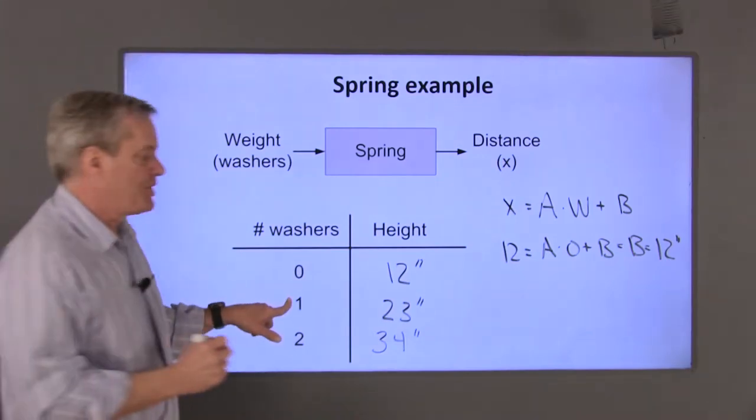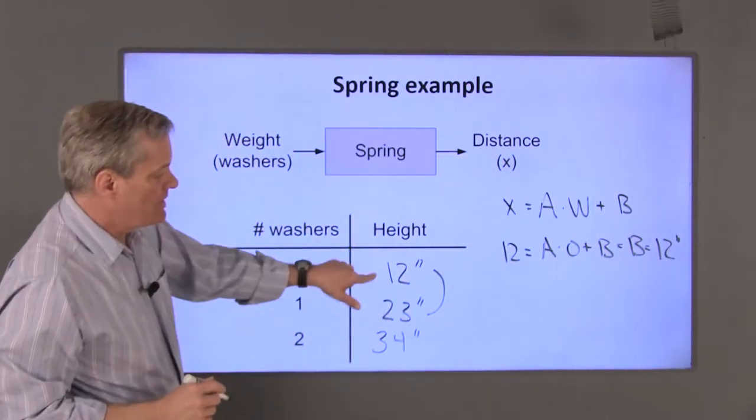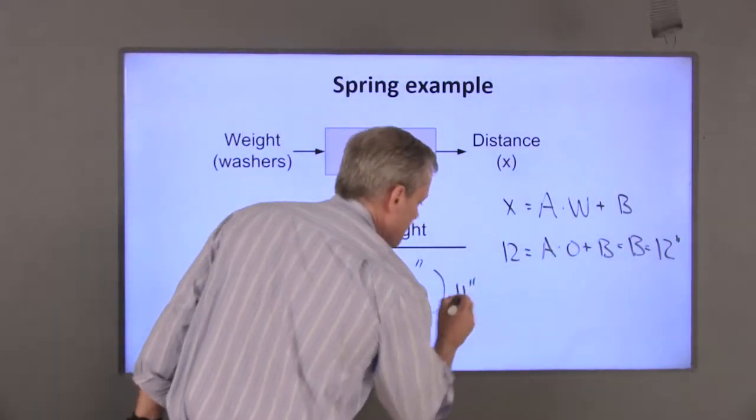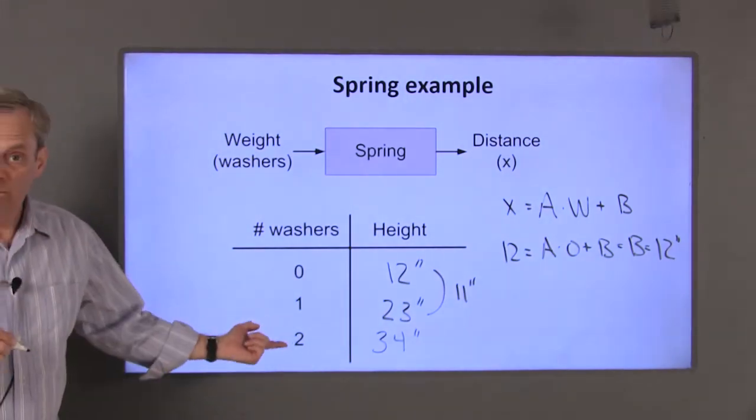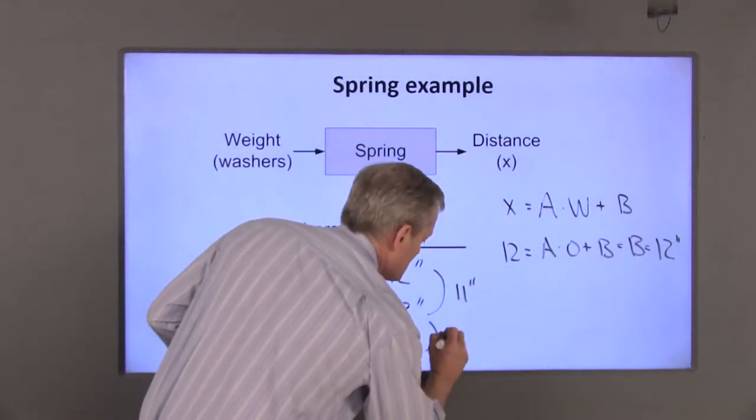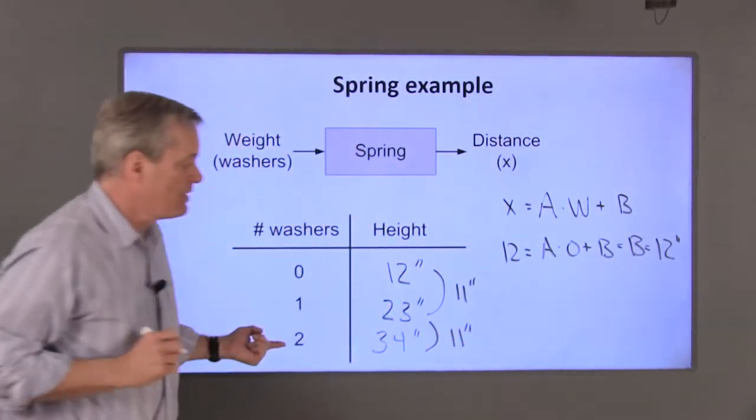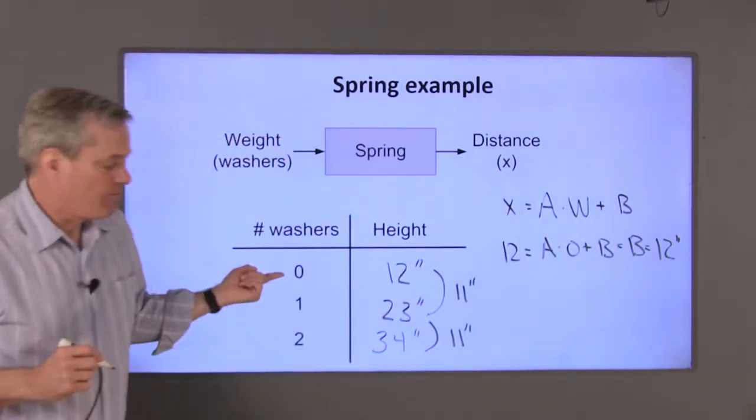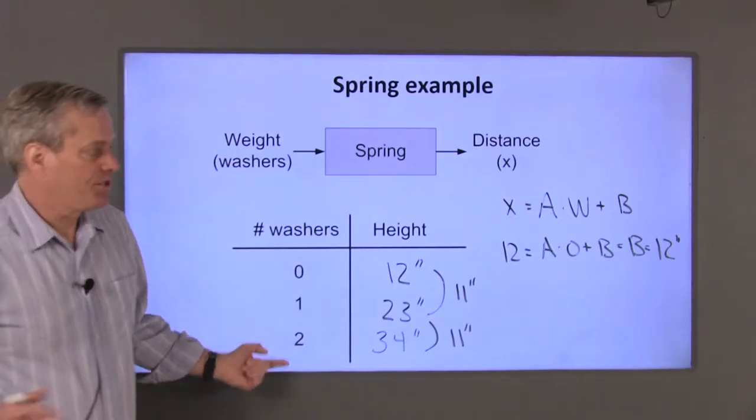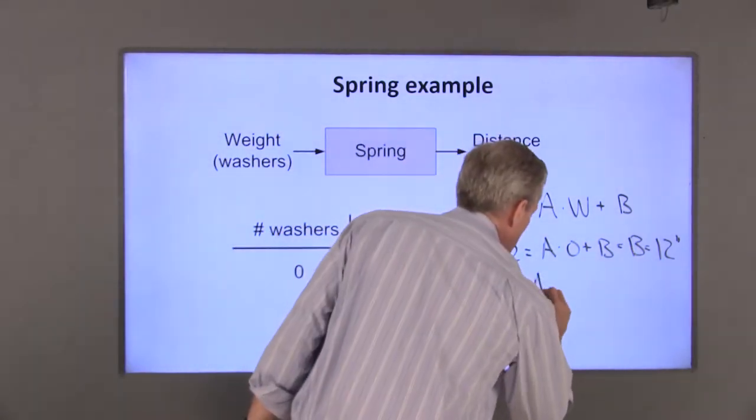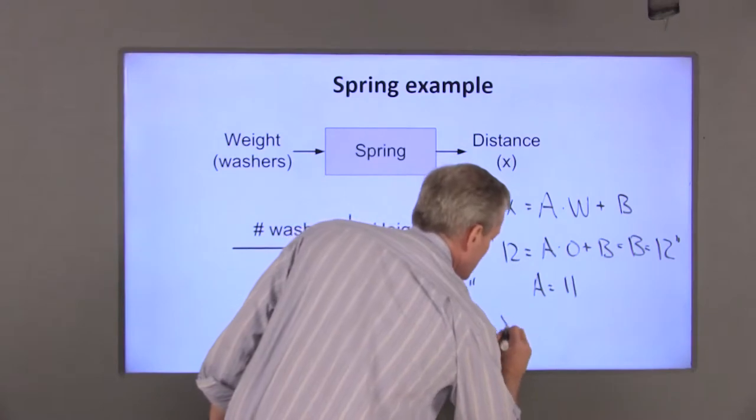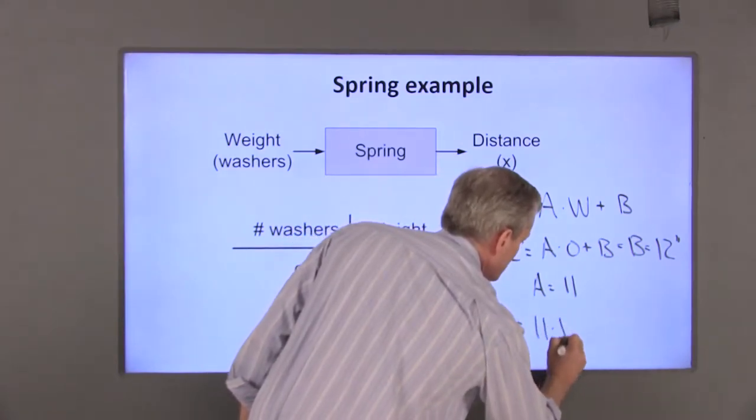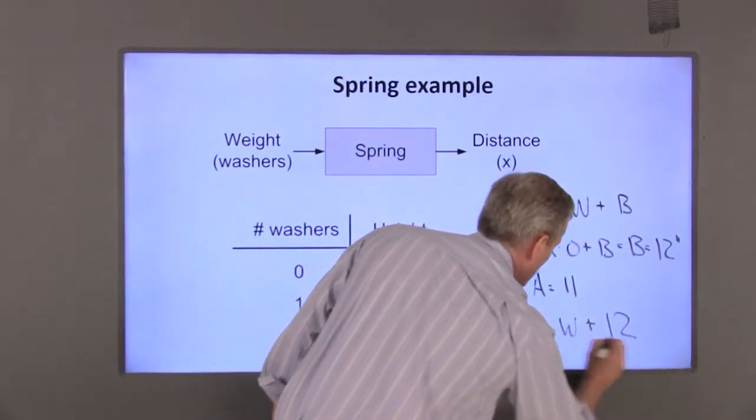If I add one washer, I get an increase in distance of 11 inches. Adding a second washer increases the distance by another 11 inches. So X increases by 11 inches for every additional washer. So A is equal to 11 and my equation becomes X is equal to 11 times W plus 12.